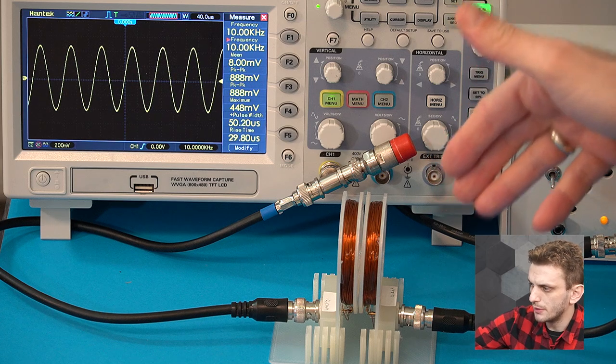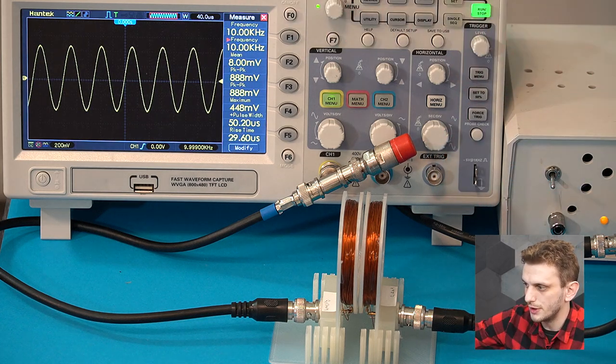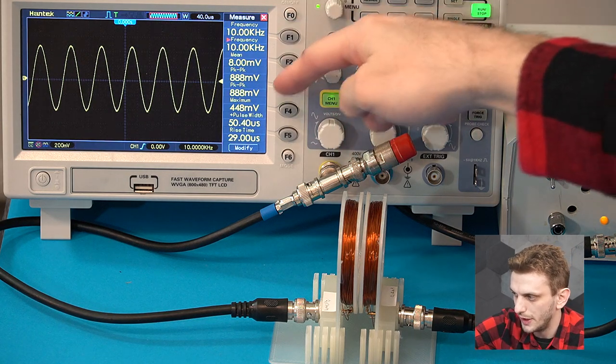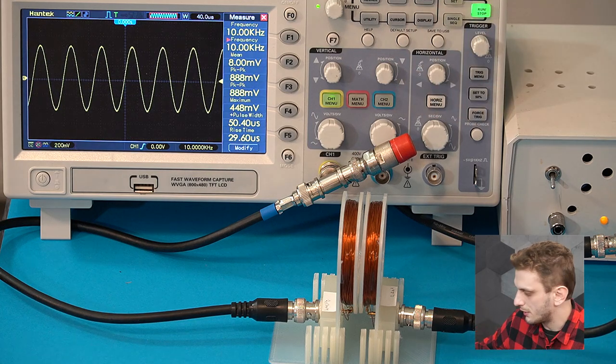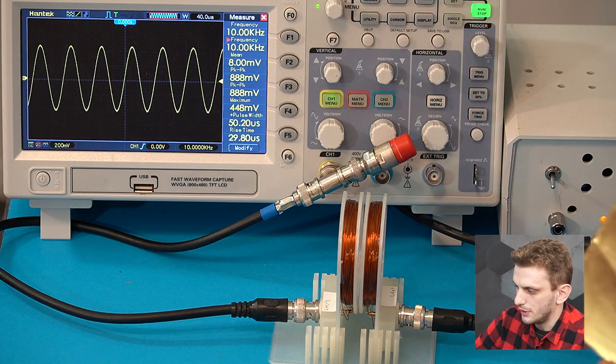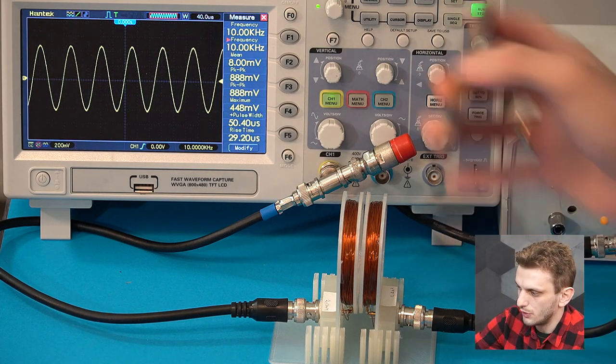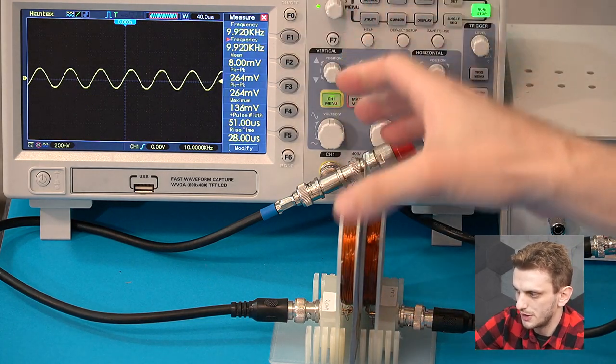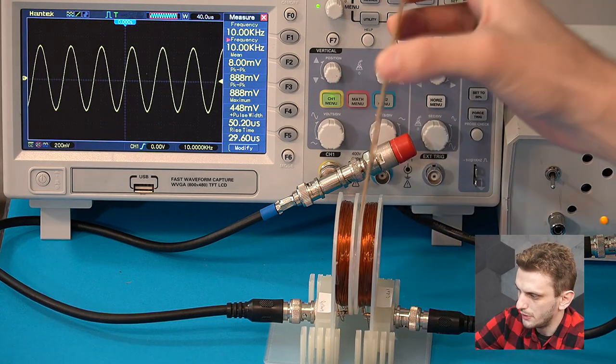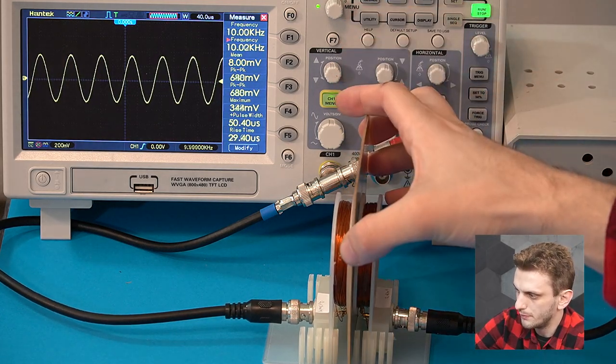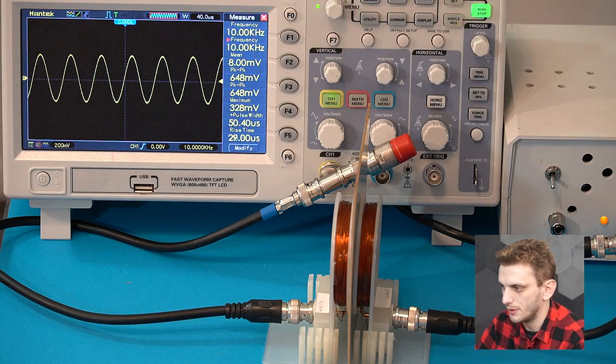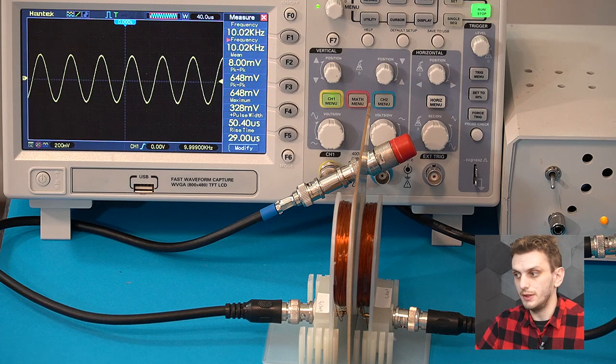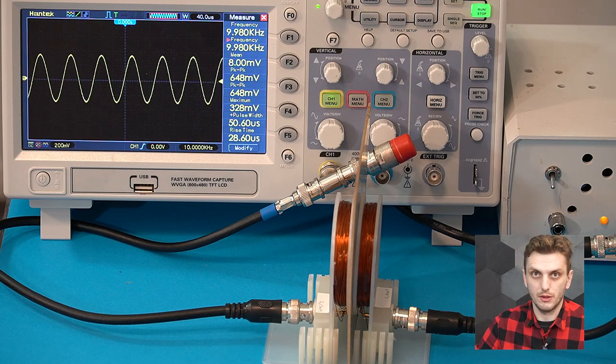With the exact same setup, I just changed my test frequency to 10 kilohertz, and now we have a default value when no material is inserted of 888 millivolts being induced into the second inductor. If we insert the two shielding materials, first the iron, we go down to 264 millivolts. If we try out the copper plate, we go down to 648. In both cases, we're getting better shielding at 10 kilohertz than we did at 1 kilohertz.